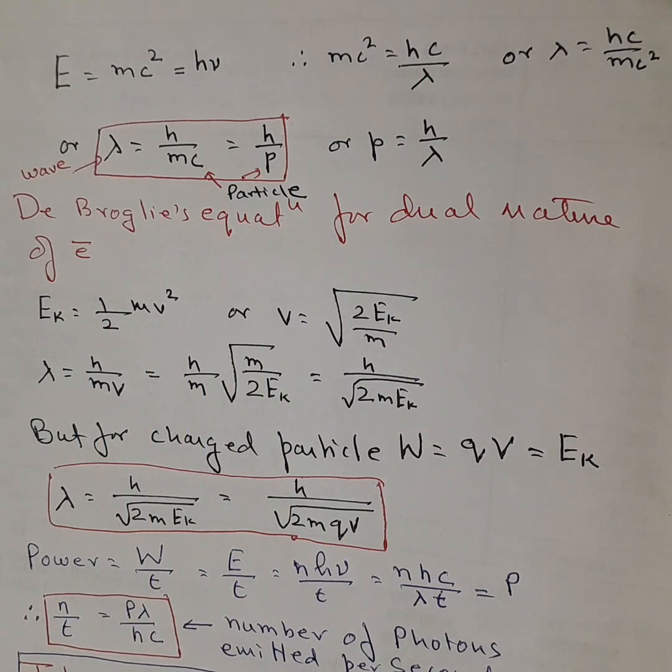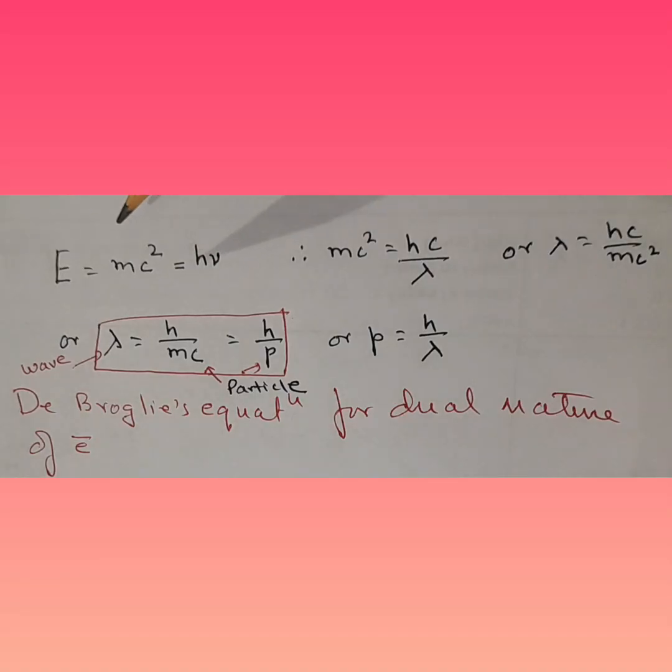Let's try and understand some of the applications that we would be applying while solving numericals in photons and electrons. Now to begin with, we know the formula for energy, Einstein's formula, E is equal to mc square.